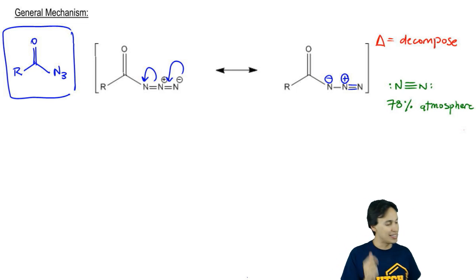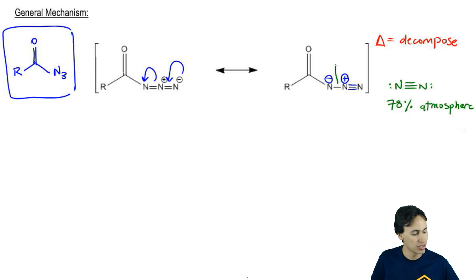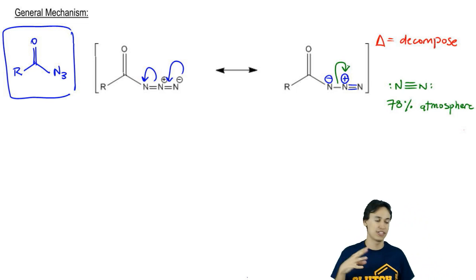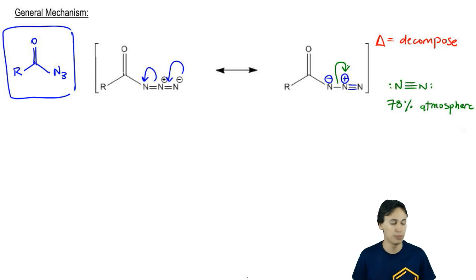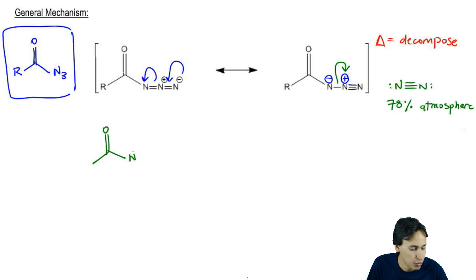In heat, what you're going to get is a decomposition reaction where these electrons pick up and leave as a lone pair, and what you wind up getting is your N with just two lone pairs and nothing else, plus your N2 gas.